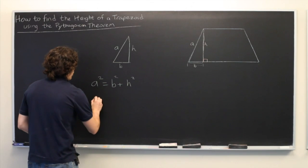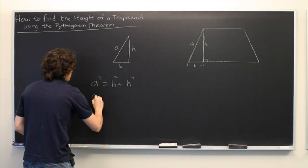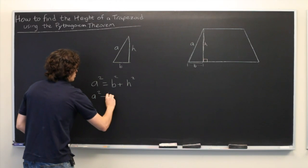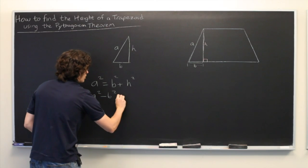Let's just subtract B squared from both sides. We get A squared minus B squared equals H squared.